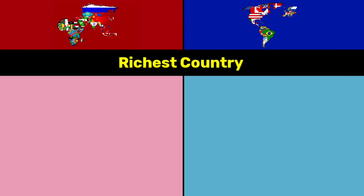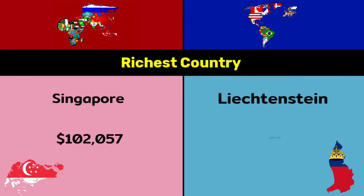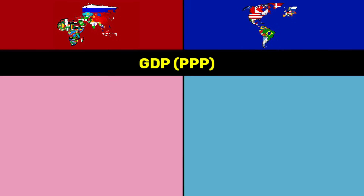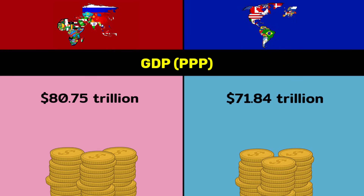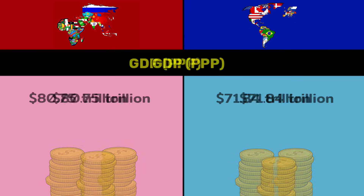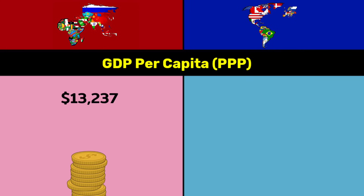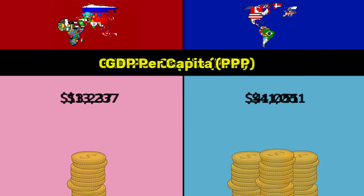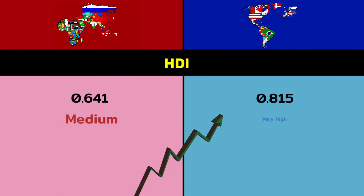Richest country: Singapore at $102,057 vs Liechtenstein at $180,001. GDP PPP: $80.75 trillion vs $71.84 trillion. GDP PPP per capita: $13,237 vs $41,051. HDI: 0.641 — medium — vs 0.815 — very high.